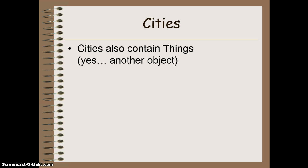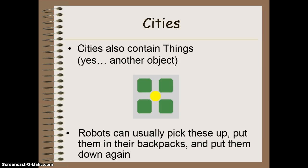Cities also contain other things called things, which of course is yet another object. You can see how this starts to develop, where everything is going to interact with each other. There's an example of what a thing would look like in a particular intersection. Robots can usually pick these things up, put them in their backpacks, and then put them back down again in the same spot or in a different spot, wherever they want.